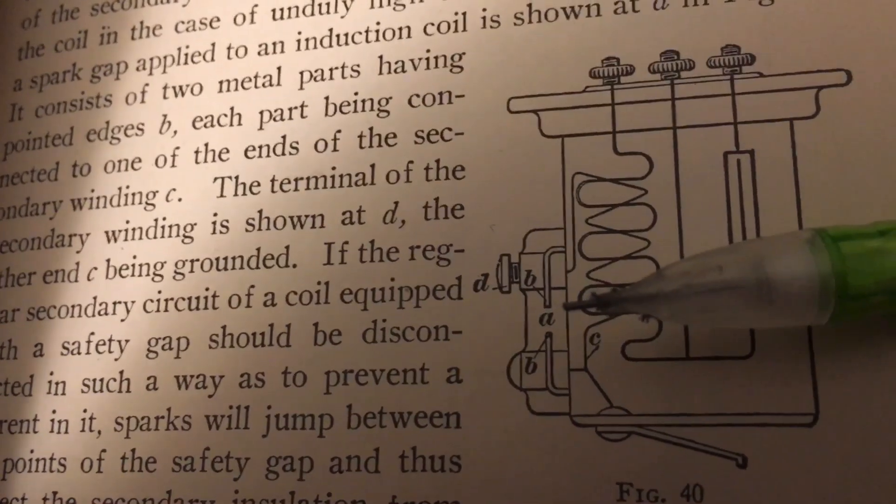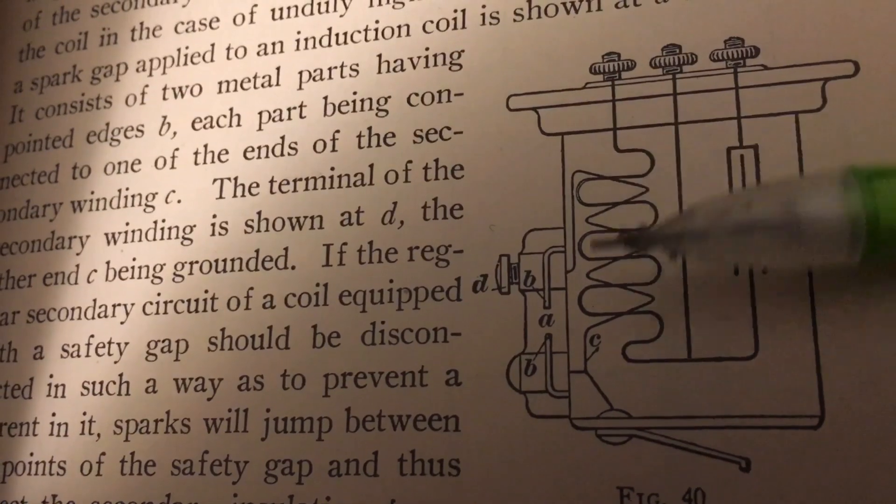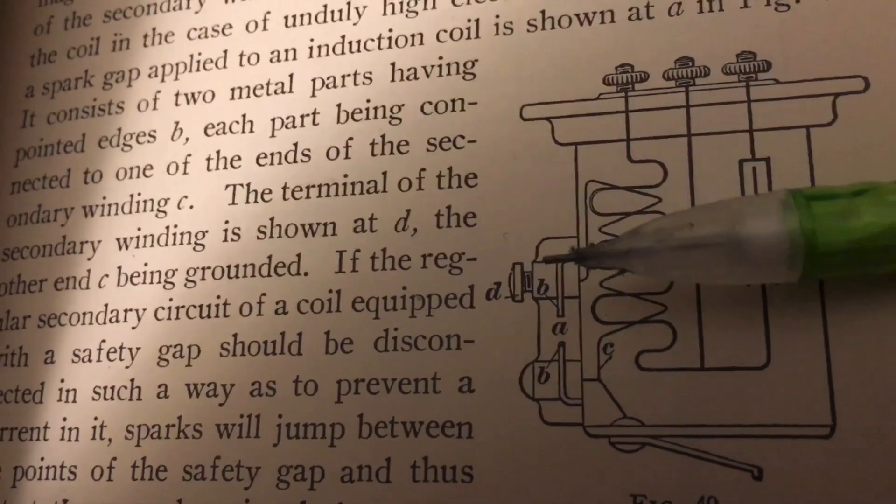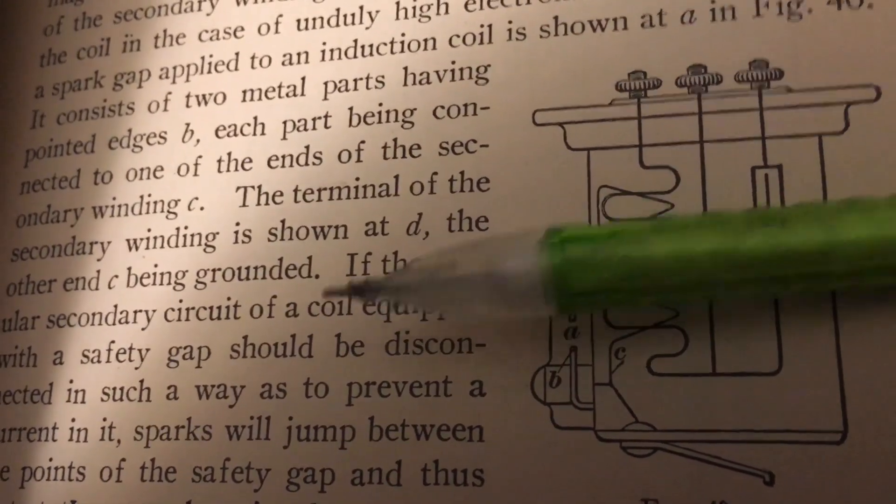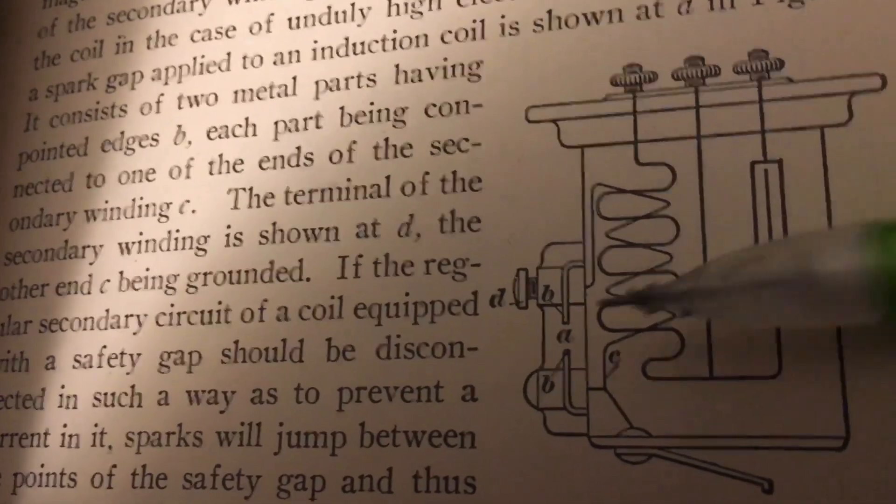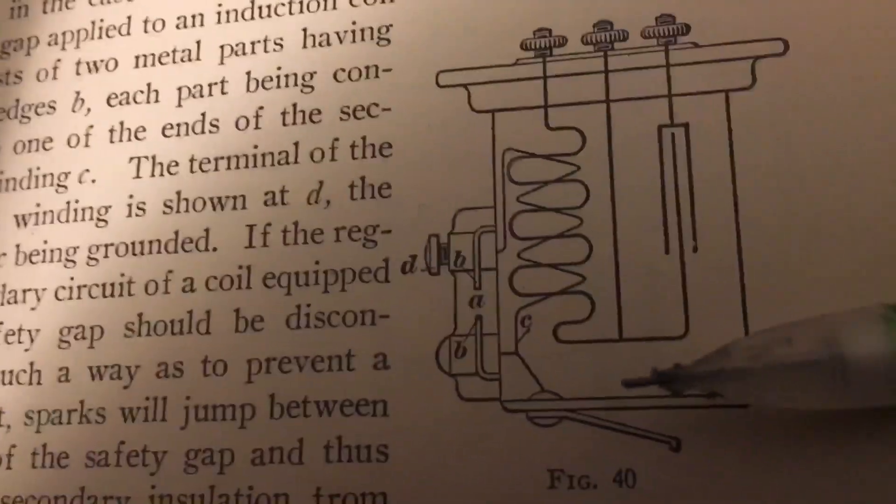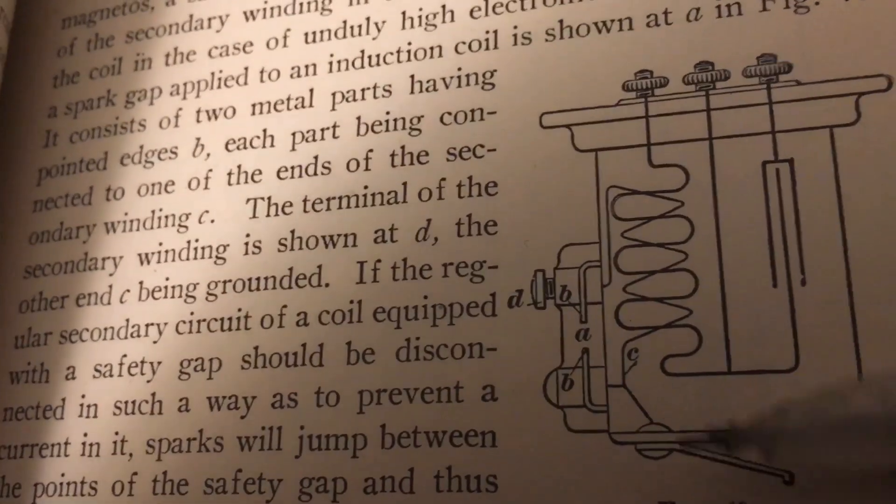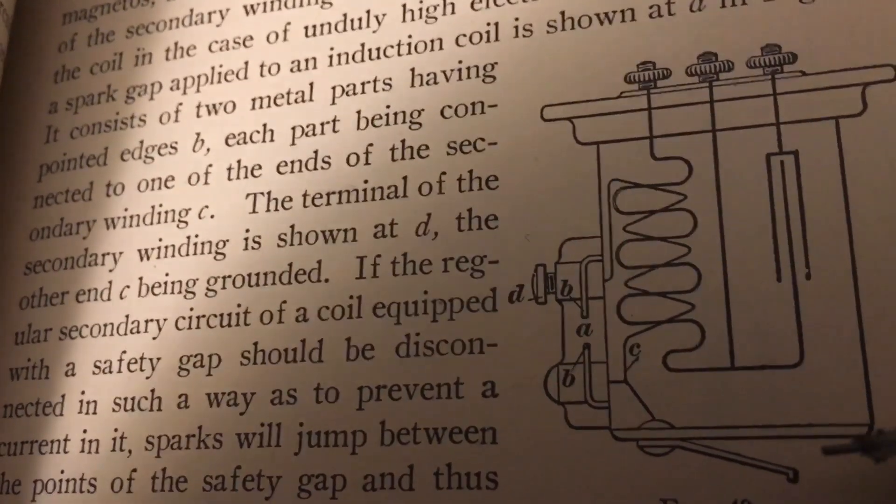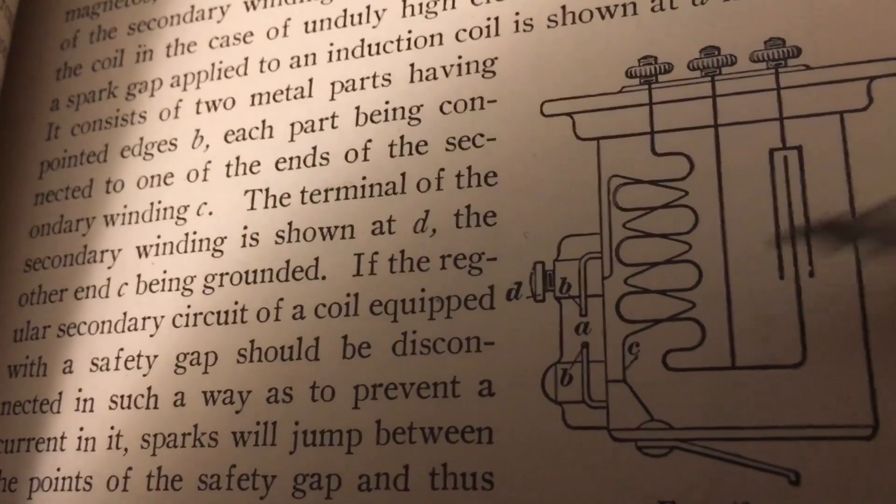So this point d here is for where the high tension lead would go off to the distributor, the secondary. And there's a tang here. When the unit is installed in the vehicle, I assume this actually grounds the secondary here at some point on the engine block or the chassis.